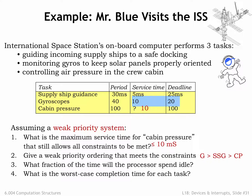Question 3: what fraction of time will the processor spend idle? We need to compute the fraction of CPU cycles needed to service the recurring requests for each task. SSG takes 5 over 30, or 16.67% of the CPU cycles. G takes 10 over 40, or 25% of the CPU cycles, and CP takes 10 over 100, or 10% of the CPU cycles. So servicing the task requests takes 51.67% of the cycles, leaving 48.33% of the cycles unused.